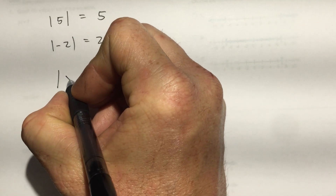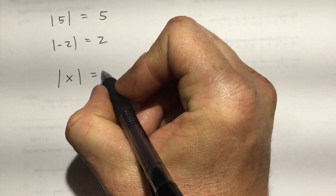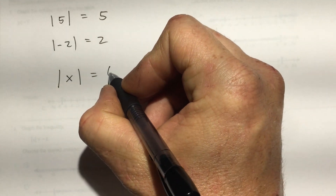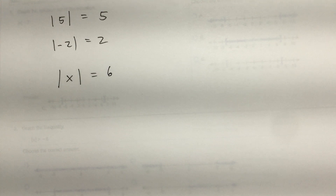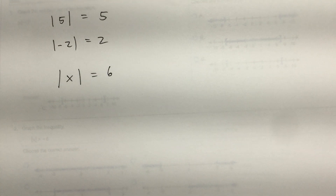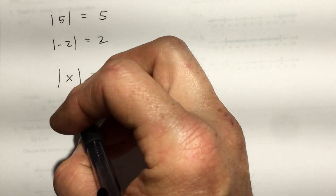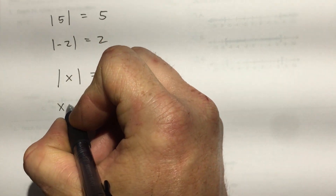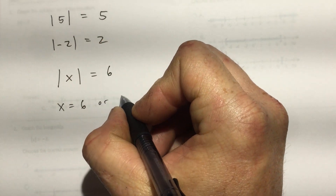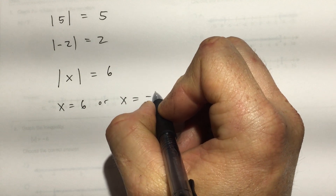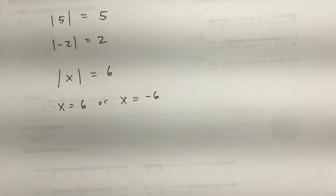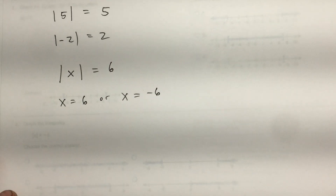Now what if you have a variable in there, like the absolute value of x equals 6? Well, what could x be? What value on the number line is 6 away from zero? There are two of them: x could be 6, or x could equal negative 6.